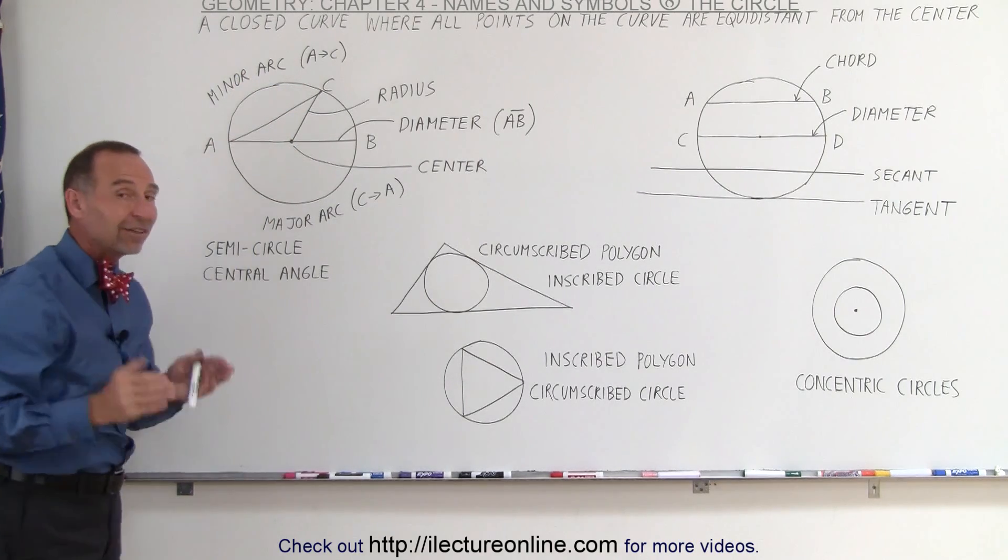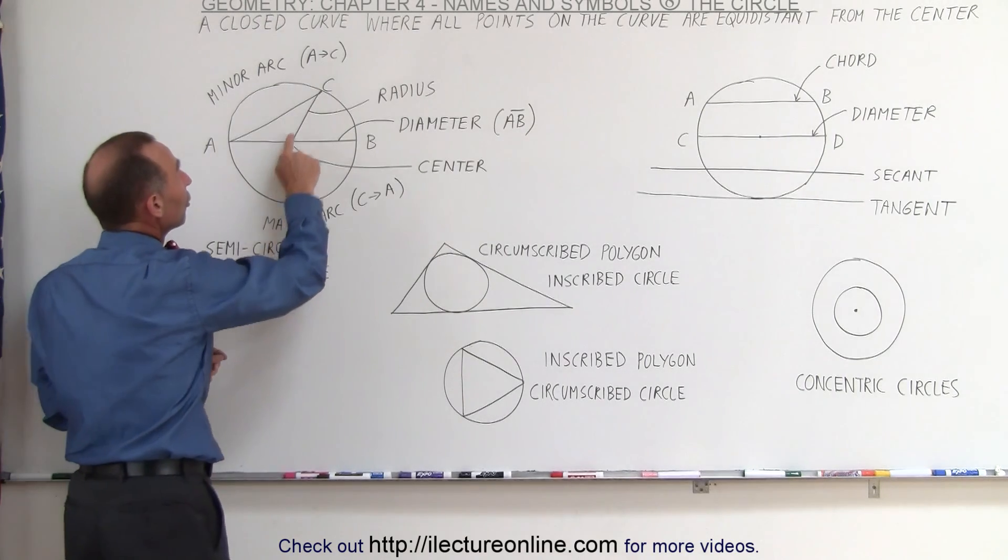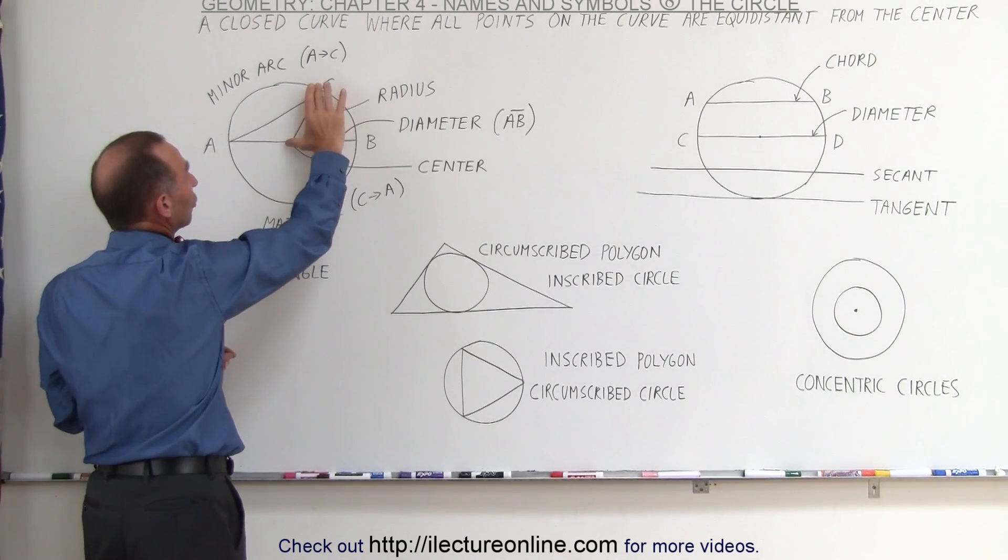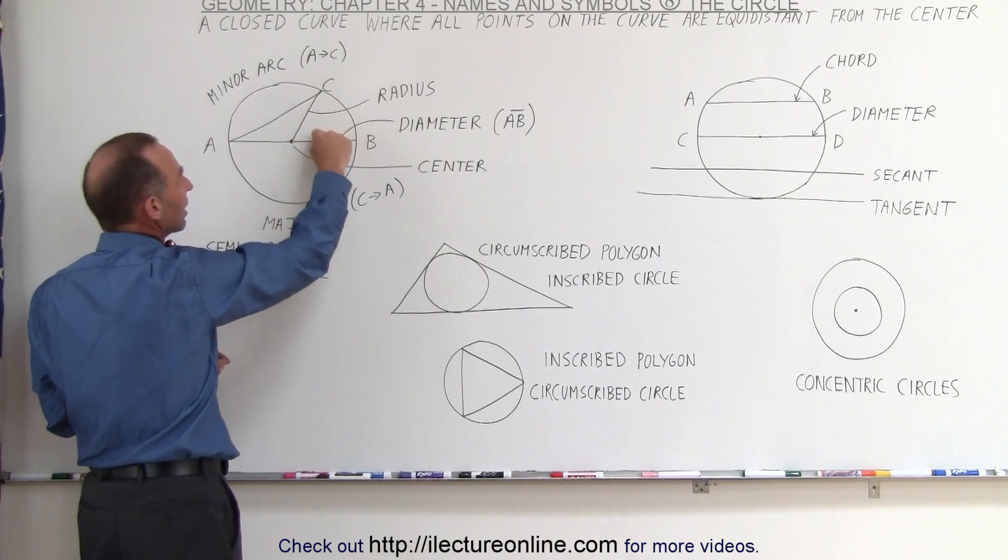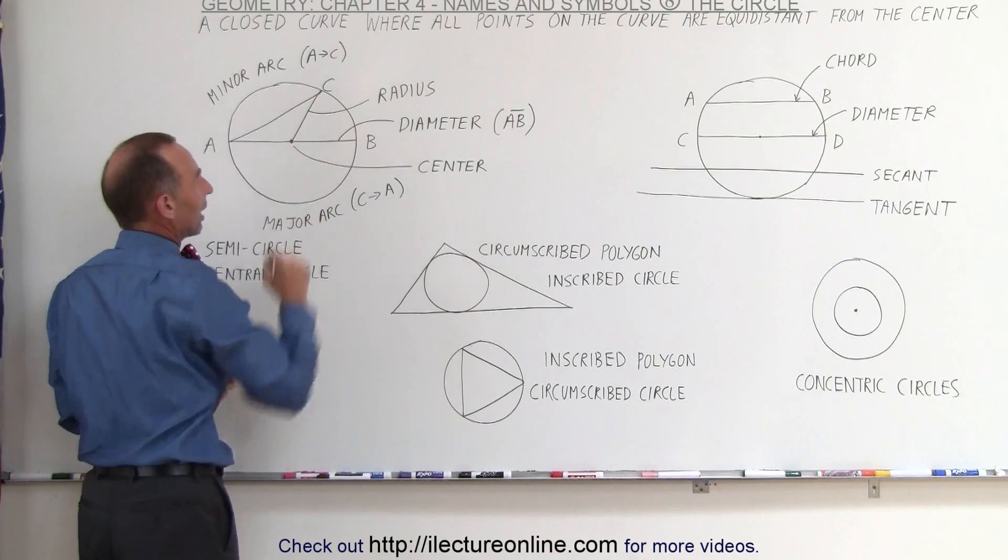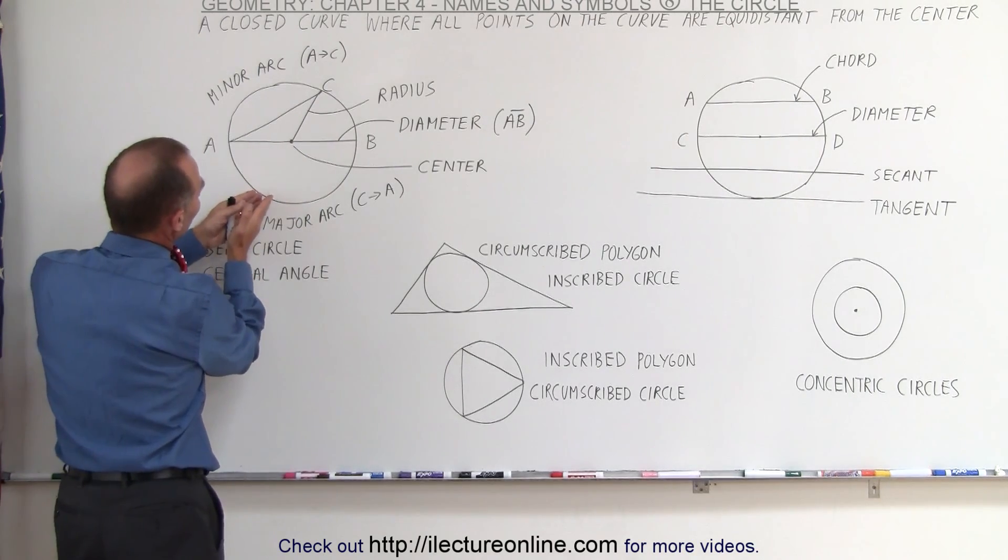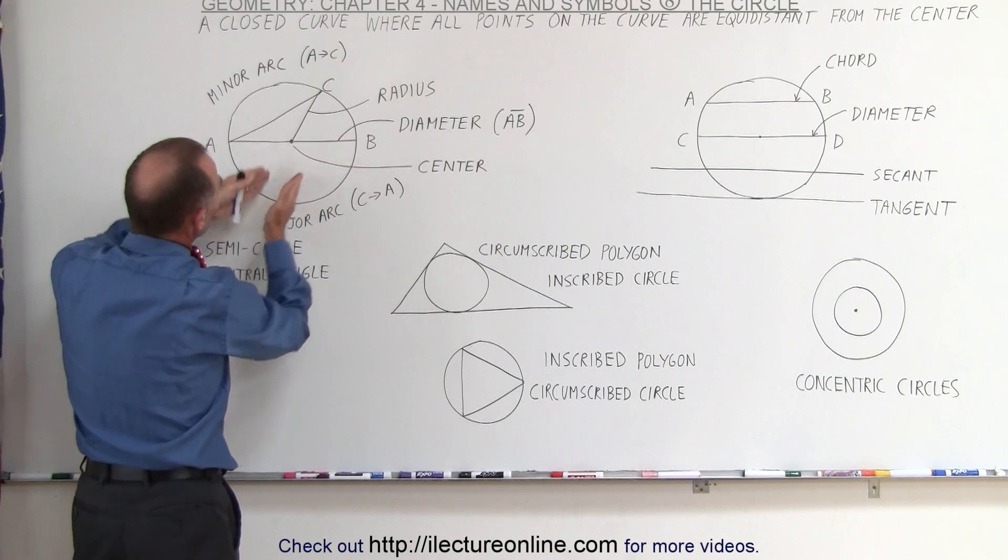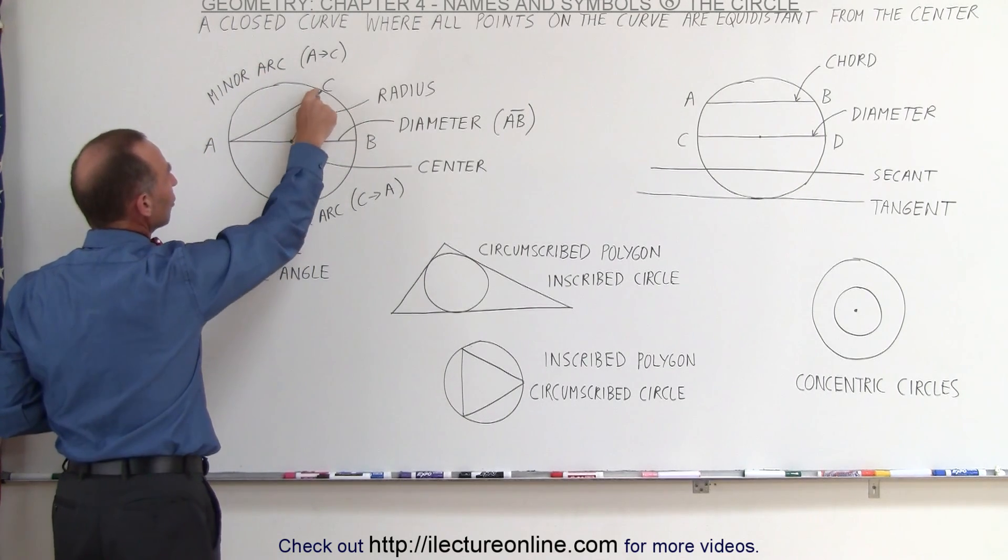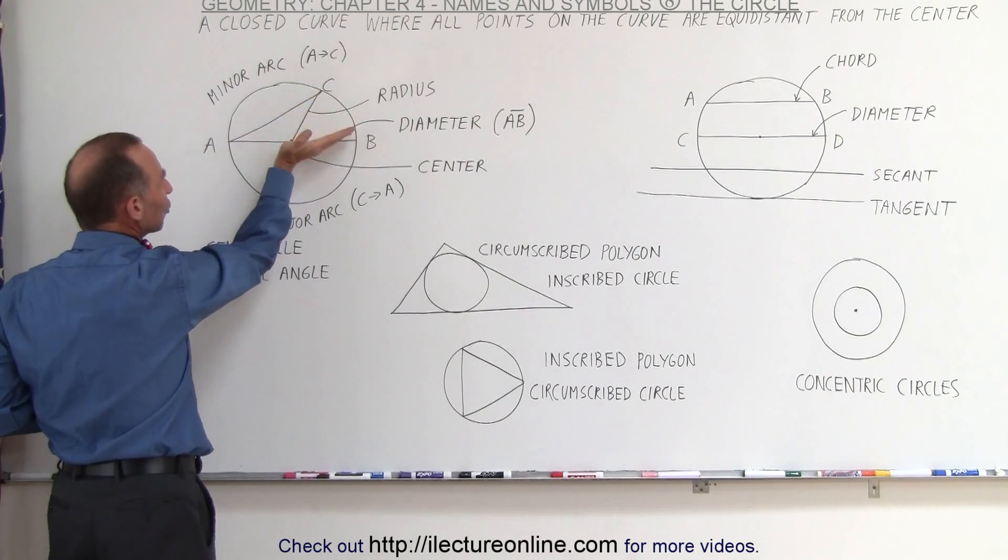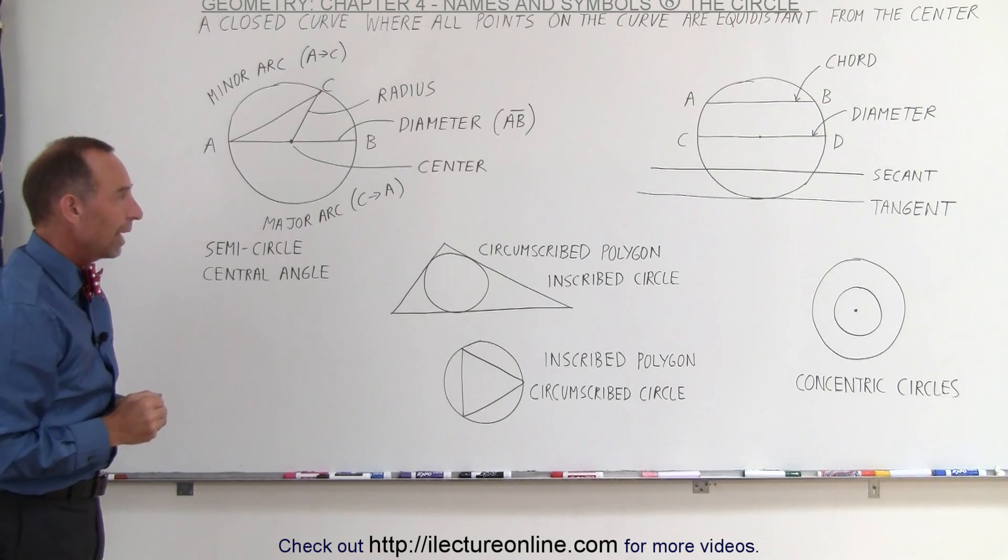A central angle is an angle formed by two lines drawn from the center to the edge of the circle, called the radius. So this is also a radius, this is a radius, so this angle here is called a central angle. If you start from a different point, let's say from the edge of the circle, and draw two lines like this, that is not called a central angle. It has to be from the center to the edge of the circle. So the angle between two radii, if we want to call it that way, is called the central angle.